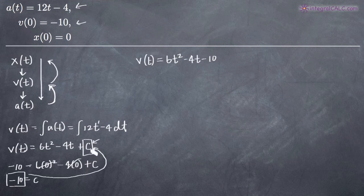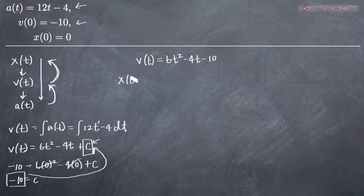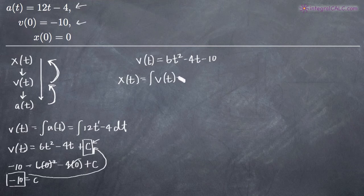We have our velocity function, but we've been asked for the position function x(t). So now we're moving up one more step — from the velocity function to the position function. To get x(t), we'll take the integral of the velocity function, which is the integral of 6t² - 4t - 10 dt.